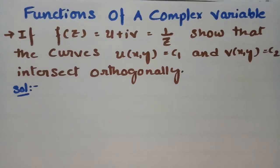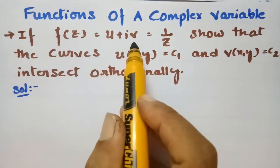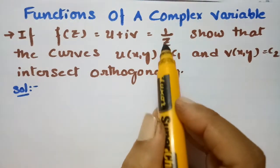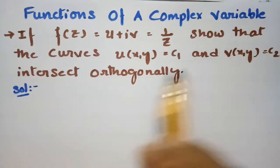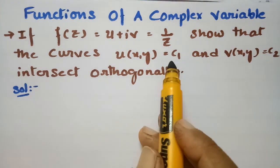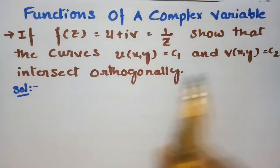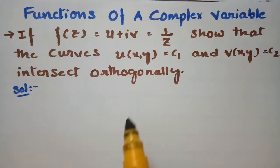In today's video, I am going to explain a problem from functions of complex variables. The function f(z) = u + iv = 1/z. We need to show that the curves u = c1 and v = c2 intersect orthogonally.